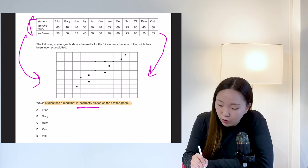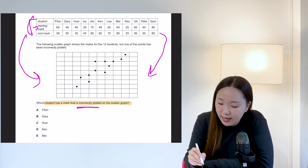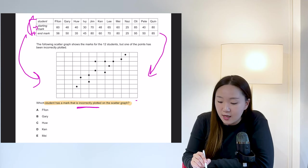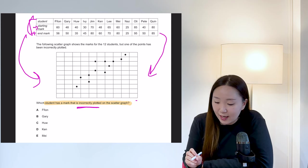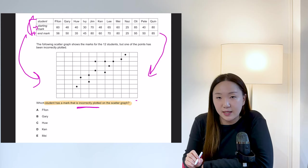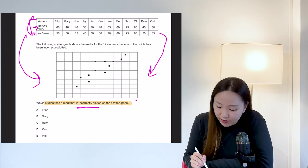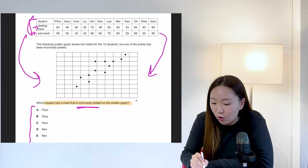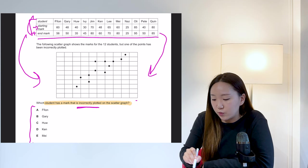So it doesn't tell you what is on each axis. So we have two bits of data for each student. So we've got a starting mark and an end mark. So the starting mark could be the X axis or it could be the Y axis. So all you want to do is just select a student and just check basically and see if it works. So let's start with Fionn. We only want to focus on our five options, by the way, look how many, look how many students there are here. We don't care about that.